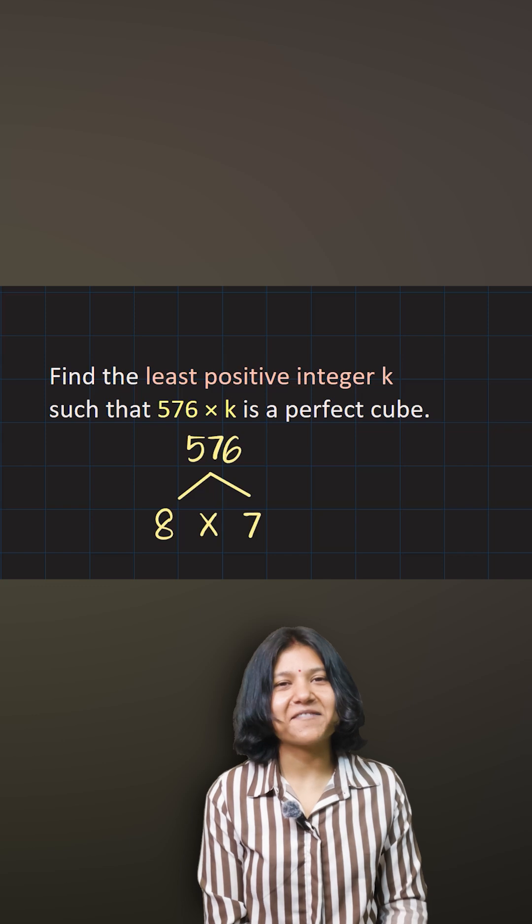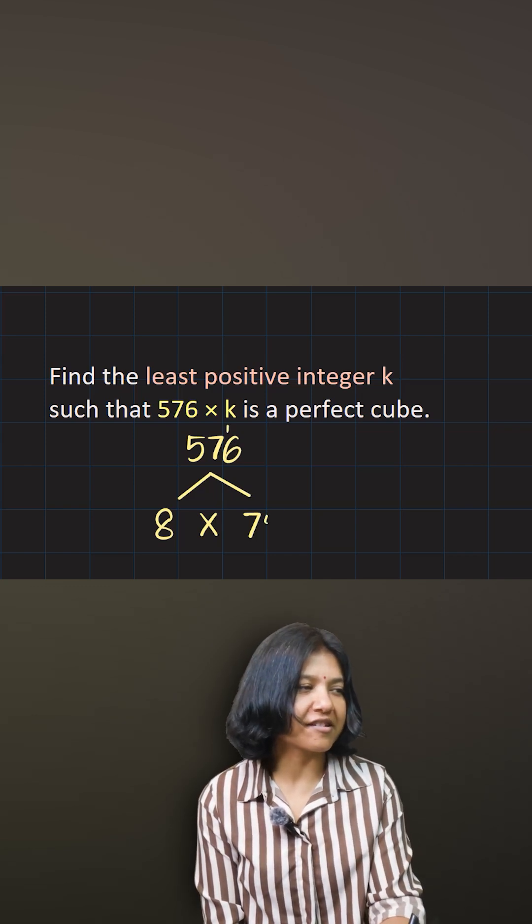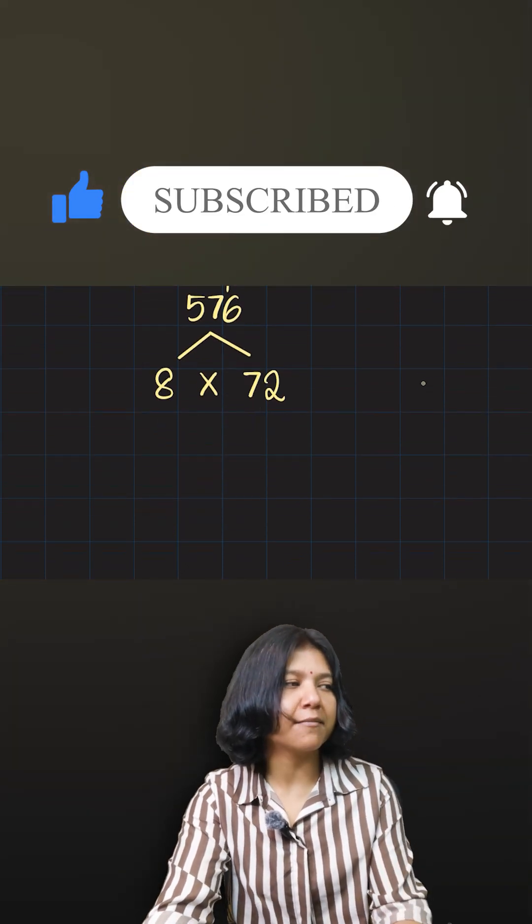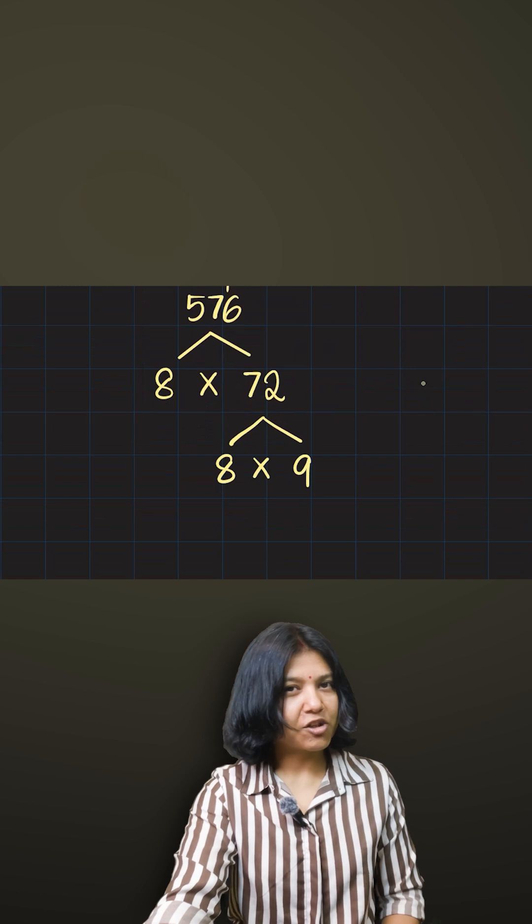Now, 72 is again divisible by the cube number 8. So 8 times 9 is 72. Why cube numbers? Because 576 can be represented as 8 times 8 times 9.